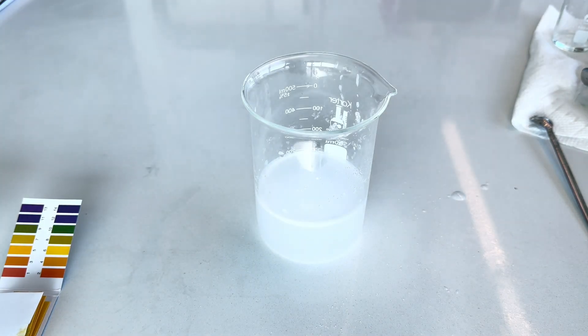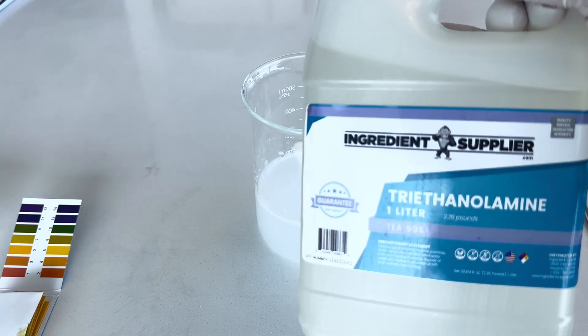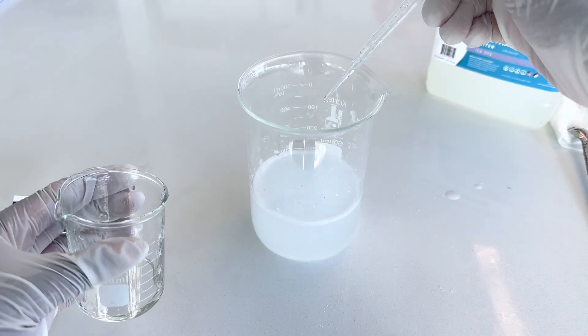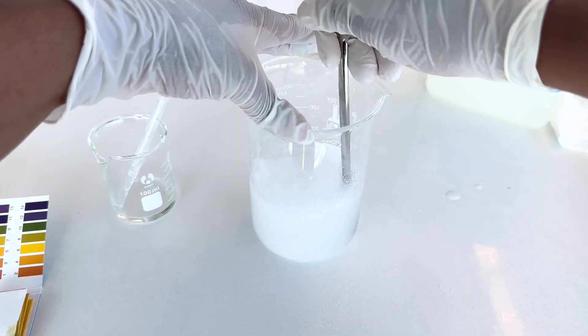Carbomer becomes more viscous at a neutral pH, so I will use the ingredient TEA, or triethanolamine, as a pH adjuster. I add in TEA five drops at a time to slowly raise the pH.